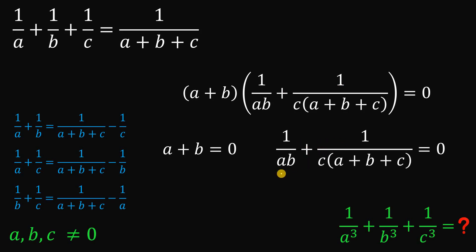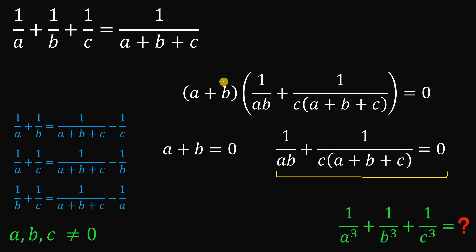Notice we have a common factor of A plus B in the numerators. So we factor it out: A plus B multiplied by the quantity 1 over AB plus 1 over C times A plus B plus C equals 0. Applying the zero product property, it follows that A plus B equals 0, or 1 over AB plus 1 over C times A plus B plus C equals 0. Focusing on the second equation gives a relationship for 1 over A plus B plus C, which equals negative C over AB — but substituting this into our given equation yields no useful relationship between A, B, and C, so that equation is not useful.